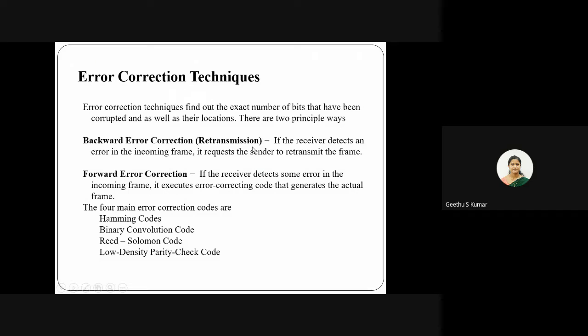Backward error correction, also called retransmission, means that if the receiver detects an error in the incoming data, it notifies the sender and the sender retransmits the data. The second method is forward error correction, where if the receiver detects an error in the incoming frame, it executes some error correction code or mechanism to recover the actual data.